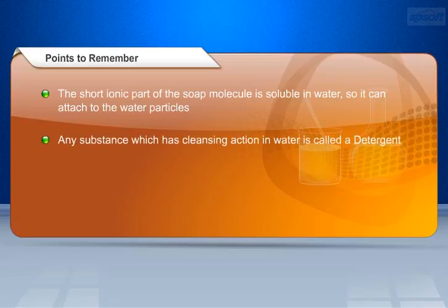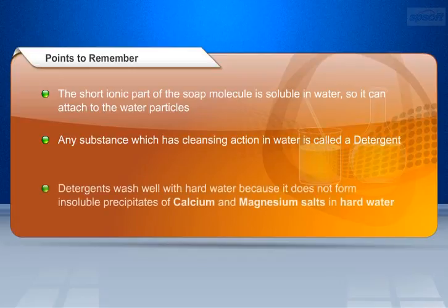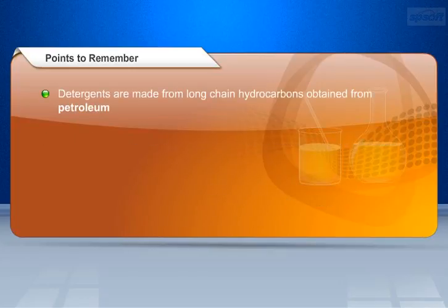Any substance which has cleansing action in water is called a detergent. Detergents wash well with hard water because they do not form insoluble precipitates of calcium and magnesium salts in hard water. Detergents are made from long-chain hydrocarbons obtained from petroleum.